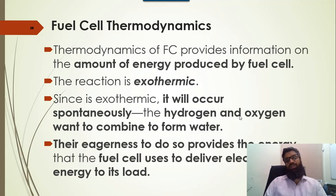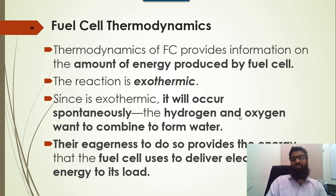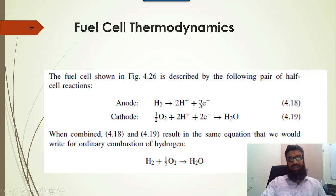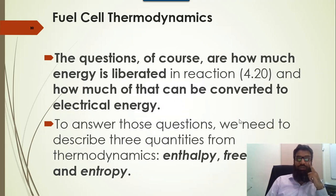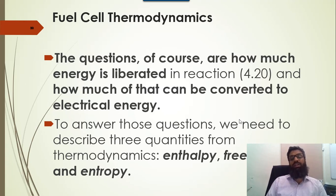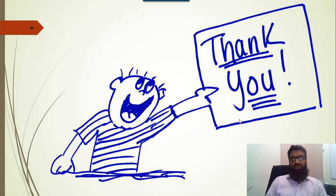The basic thermodynamics of the fuel cell — when we use a fuel cell, the chemical reaction is an exothermic reaction. These exothermic reactions are spontaneous — hydrogen immediately combines with oxygen to form water. Their tendency to do so provides the energy that the fuel cell uses to deliver electric energy to the load. The basic chemical reaction is: H2 → 2H+ + 2e−, and then 2H+ will combine with oxygen to form H2O. For the thermodynamic conversion of the fuel cell, we need to understand three terminologies: enthalpy, free energy, and entropy, which will be discussed in the next lecture.